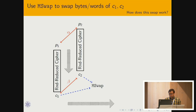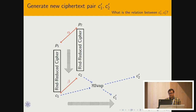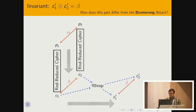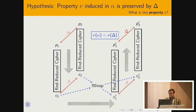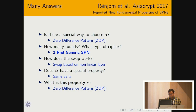We use the function M-swap on C1 and C2 to obtain a new pair of ciphertexts C1' and C2', where the difference of C1' and C2' equals the difference of C1 and C2. These C1' and C2' are decrypted using the round-reduced cipher to obtain a new pair of plaintexts. This work builds on Rønjom et al. 2017, who showed a special relation: for two generic SPN rounds, the zero difference pattern of P1 and P2 equals the zero difference pattern of P1' and P2'.